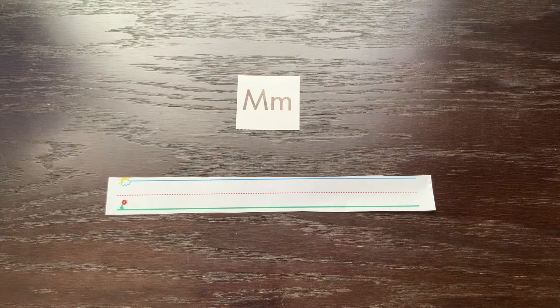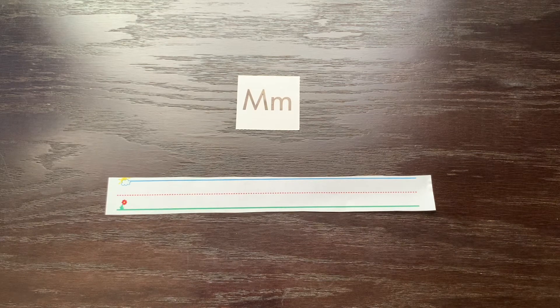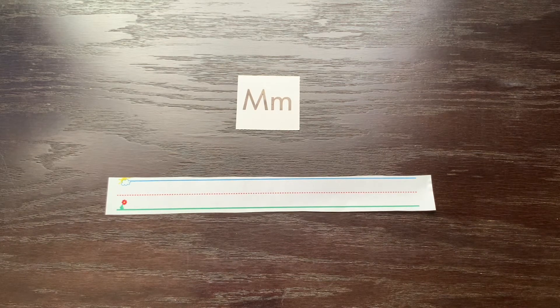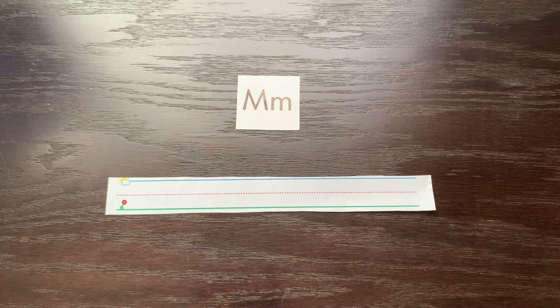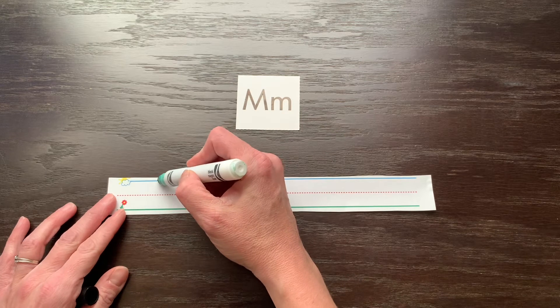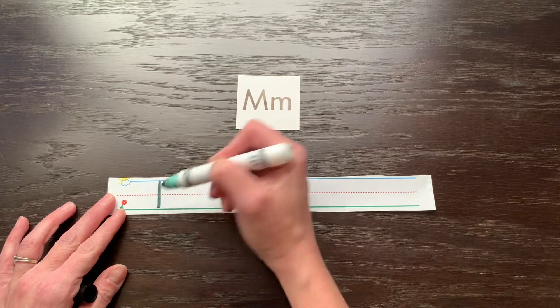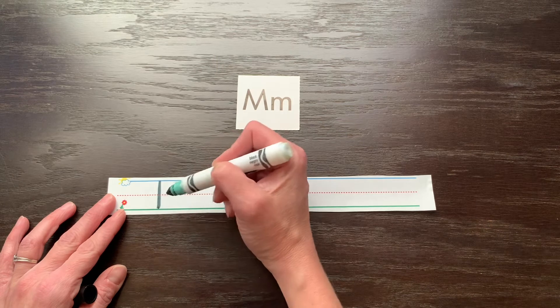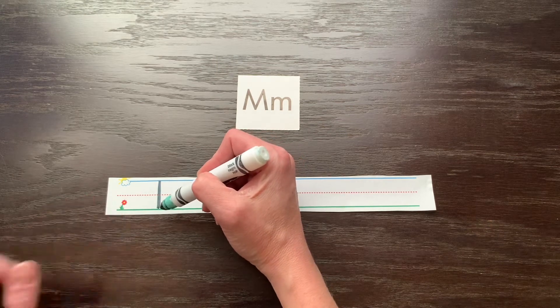For capital M you're going to start at the top because like all capital letters, M is a tall or big letter. So capital M starts at the top and you make the big line drop. Just a straight line all the way to the ground. Then this is a frog jump letter.